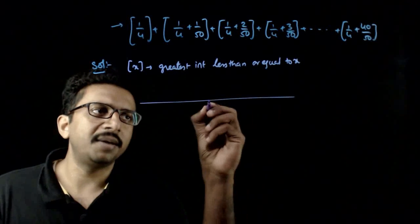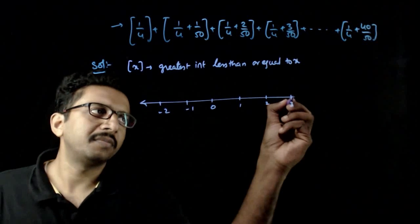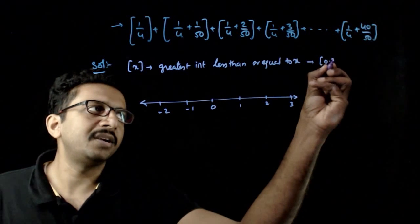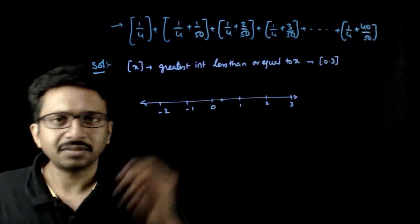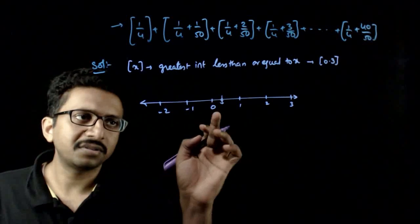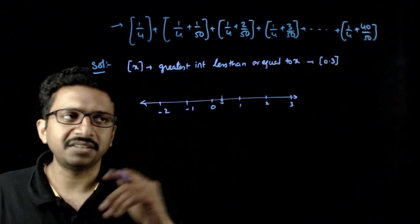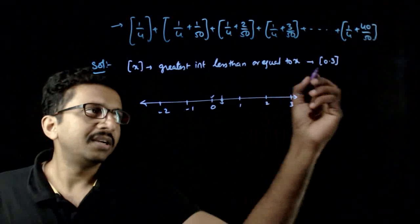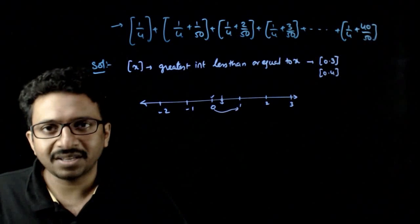On the number line with 0, 1, 2, 3, minus 1, minus 2, and so on — if you want the integer part of any number, say 0.3, you take 0.3 on the real number line. It lies somewhere between 0 and 1. You consider all the integers less than or equal to 0.3, and the greatest of those is 0. So the integer part of 0.3 is 0, and similarly the integer part of 0.4 is also 0. For all numbers lying between 0 and 1, the integer part is 0.